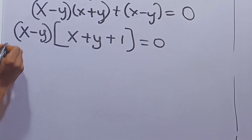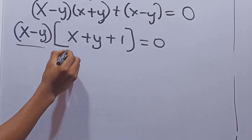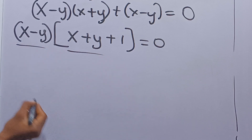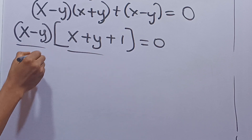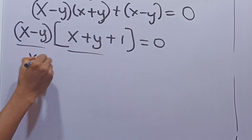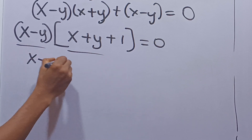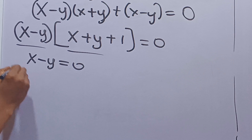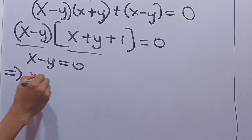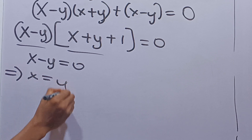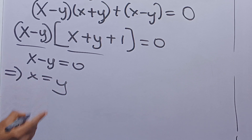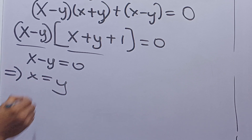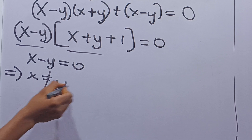When the product of this is equal to 0, it's either the first factor is equal to 0 or the second one is equal to 0. So it's either x minus y is equal to 0, implying that x is equal to y. But we declare that x is not equal to y.